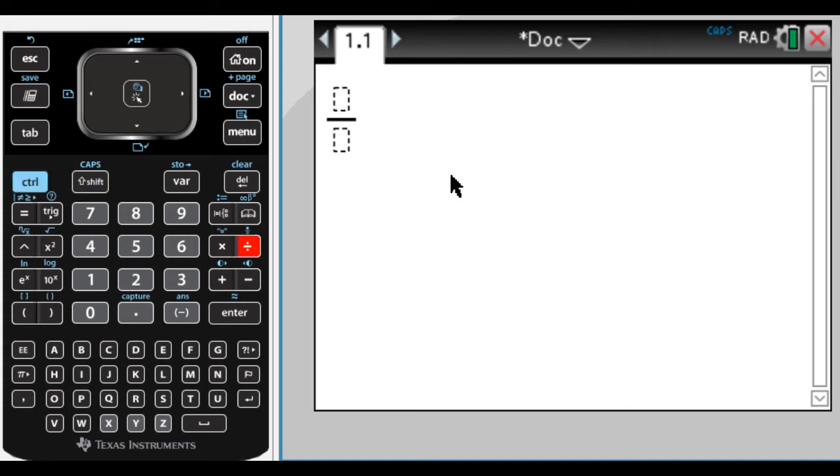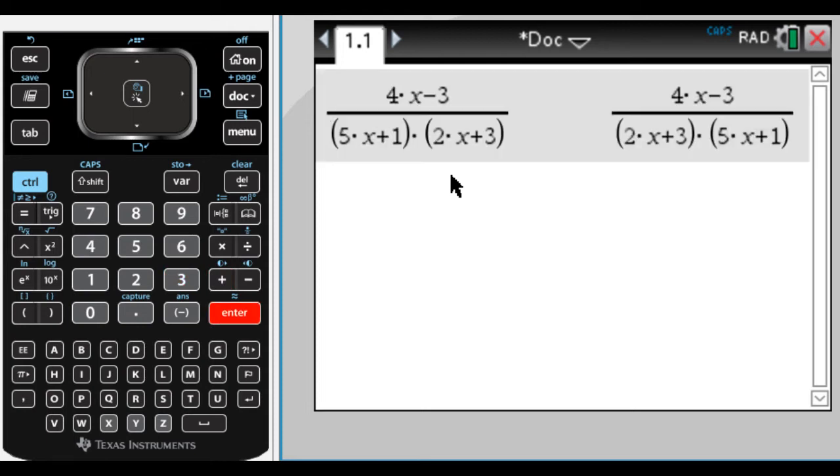So we need a problem, so let's just make one up. 4x minus 3 over, I'm going to write the denominator in factored form, 5x plus 1, and then 2x plus 3, let's say. So this is my original problem.